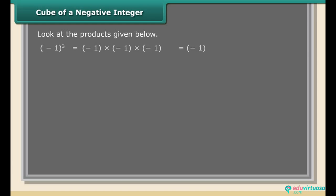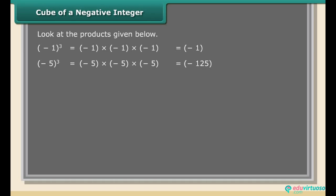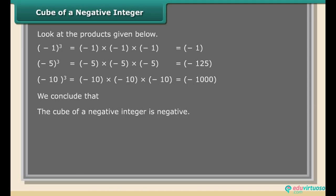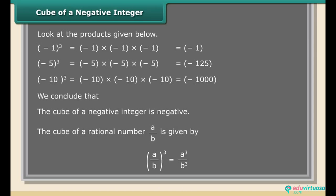Cube of a negative integer. Look at the products given below: (−1)³ = (−1) × (−1) × (−1) = −1. (−5)³ = (−5) × (−5) × (−5) = −125. (−10)³ = (−10) × (−10) × (−10) = −1000. We conclude that the cube of a negative integer is negative. The cube of a rational number a/b is given by (a/b)³ = a³/b³.